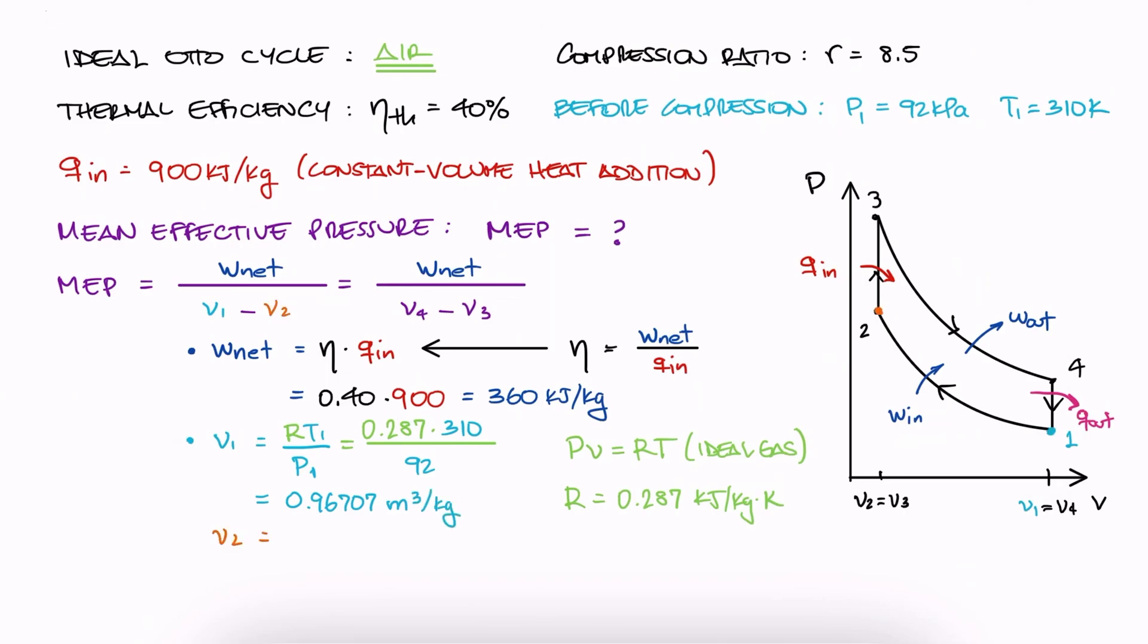And finally, we need V2. Since the compression ratio is V1 over V2, V2 is V1 over the compression ratio. We evaluate to find V2.